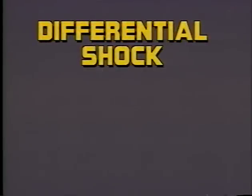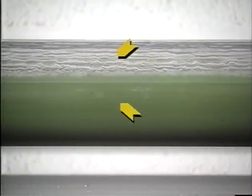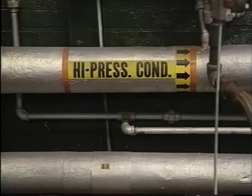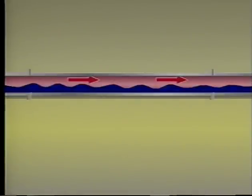Differential shock, like thermal shock, occurs in biphase systems. Differential shock can occur whenever steam and condensate flow in the same line, but at different velocities, such as in high-pressure condensate return lines. In biphase systems, the velocity of the steam is often ten times the velocity of the liquid.